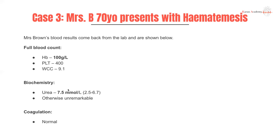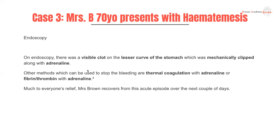Question: should you give this person blood? The answer is no — as we discussed, although her hemoglobin is slightly low, we do not transfuse blood unless hemoglobin drops to 70 or below. She doesn't have congestive cardiac failure, so the threshold is 70. Anything less than 70 — yes, give her blood. Anything more — don't.